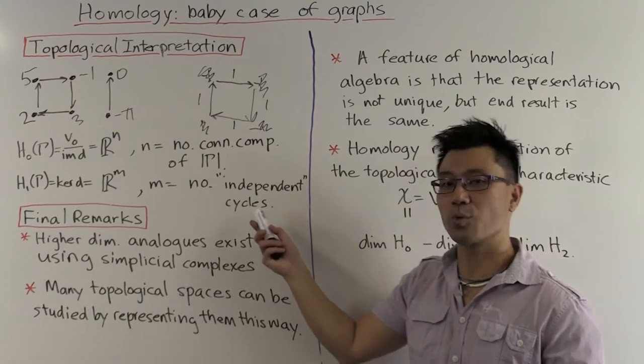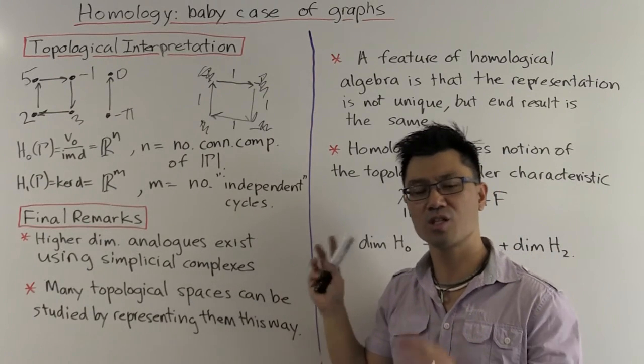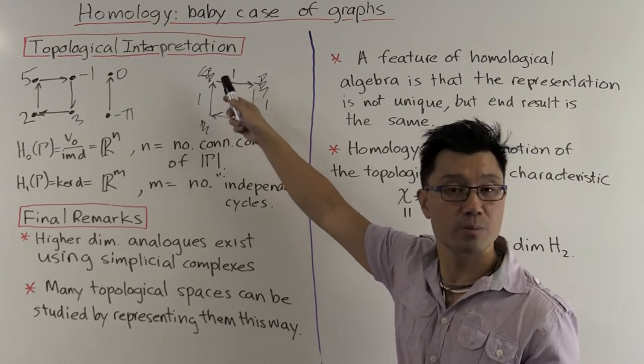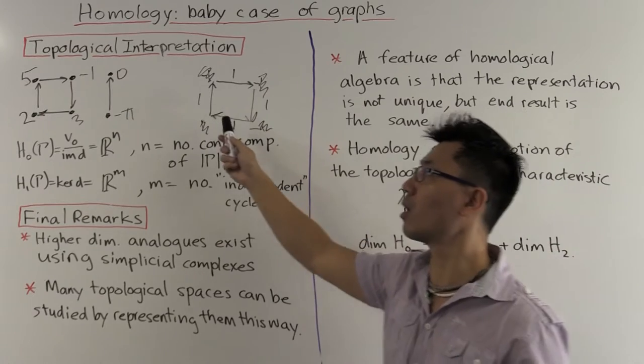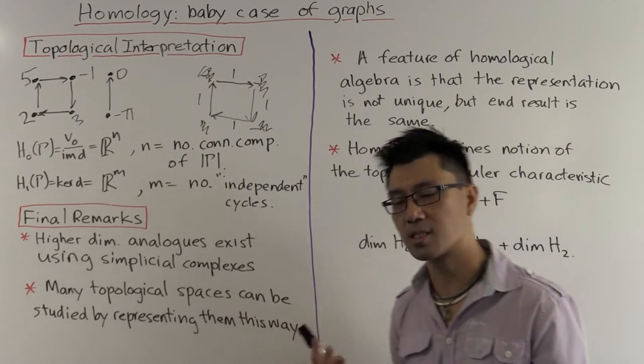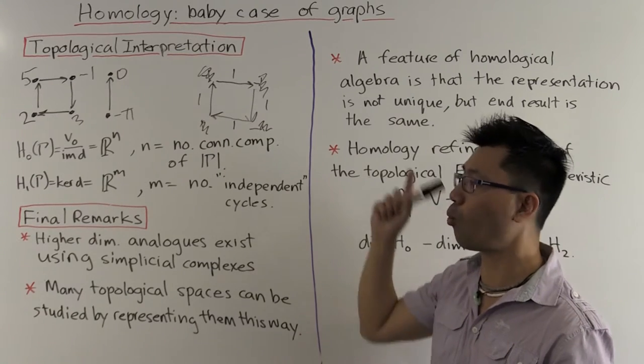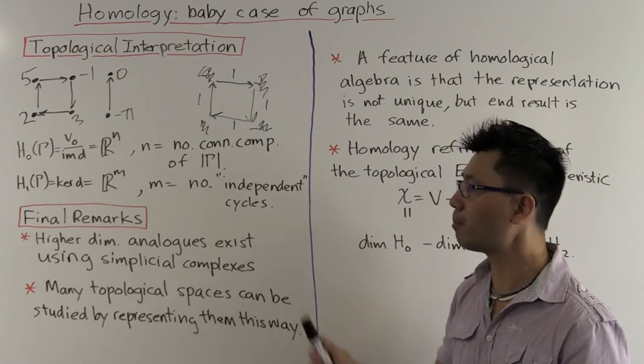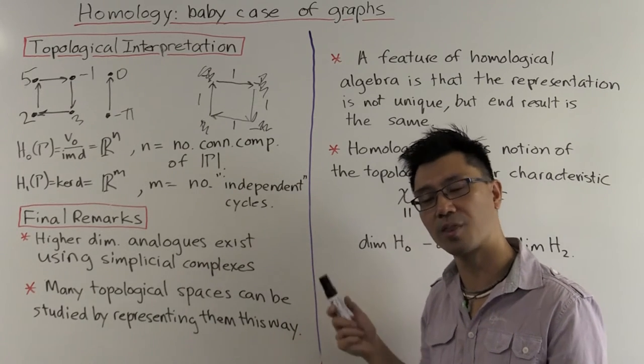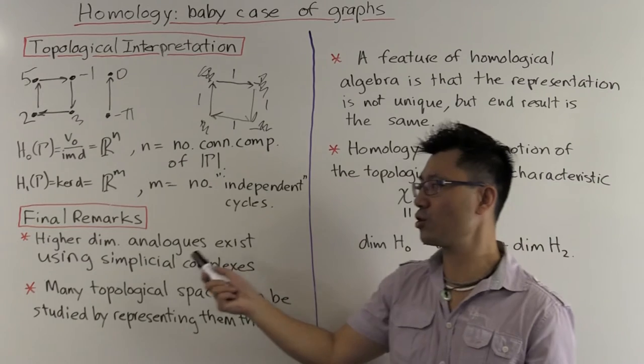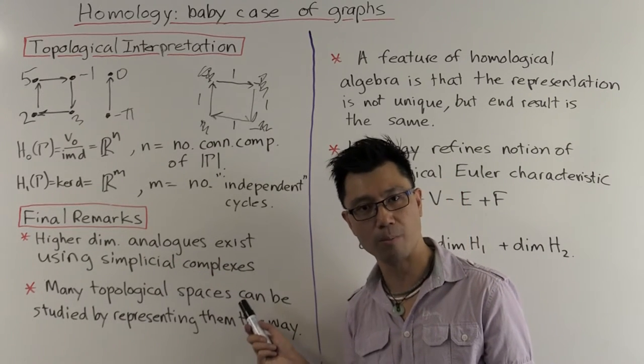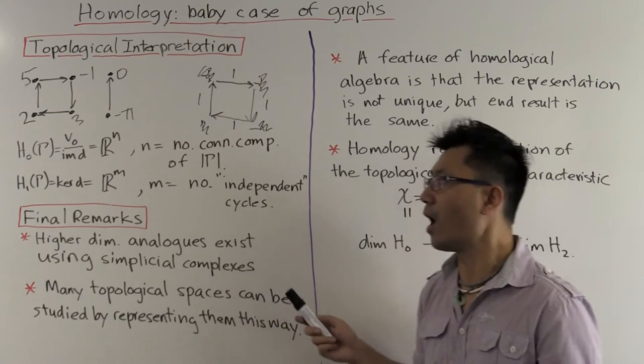Let me just conclude with some final remarks. So the first thing is that this is the simplest example that can occur. Topological spaces which come from graphs. And they of course give topological spaces which in a certain sense are one dimensional. But there are higher dimensional analogues of this theory. If you want to look at surfaces and higher things like that, you have to use higher dimensional analogues of graphs called simplicial complexes.